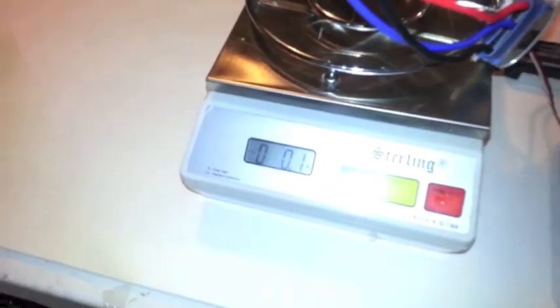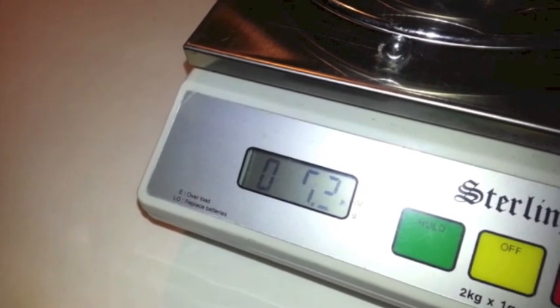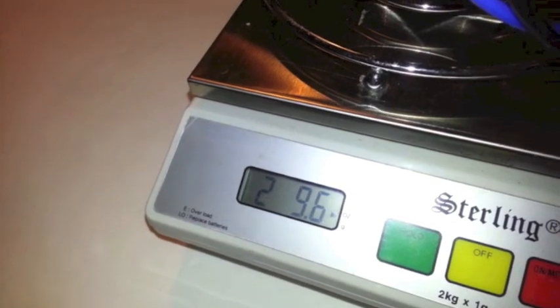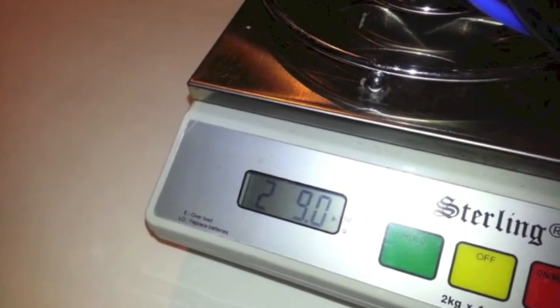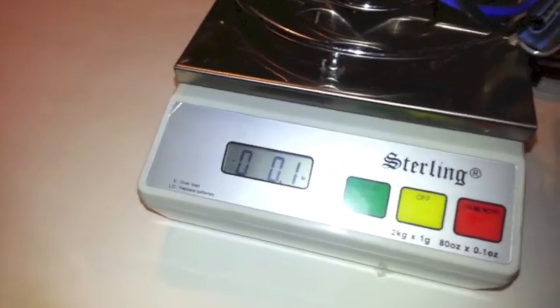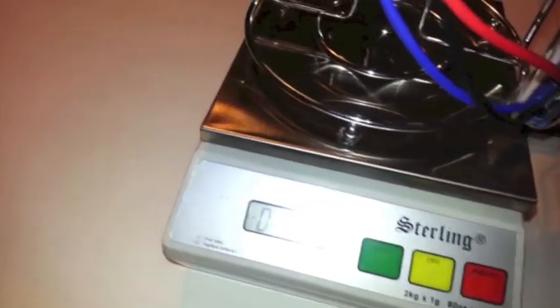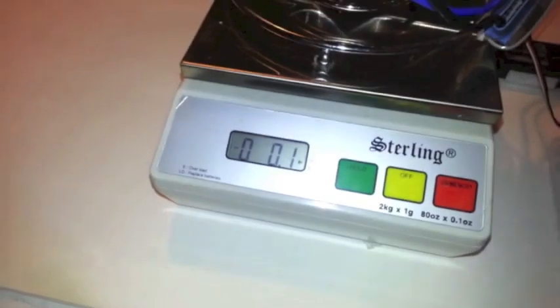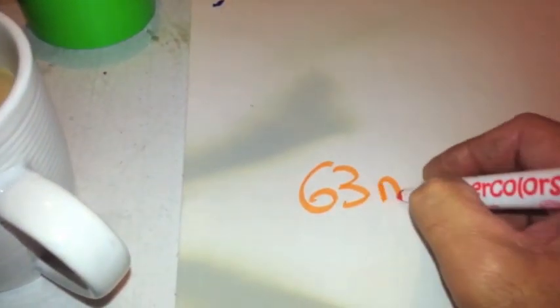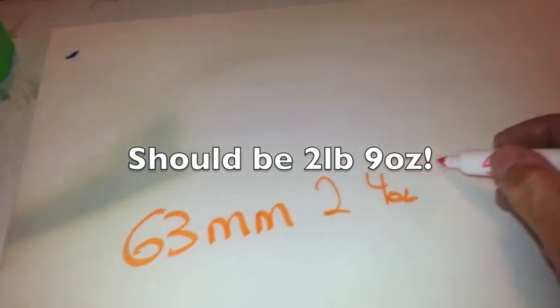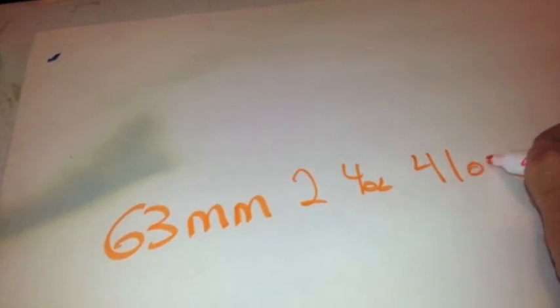Let's see what we get here. Okay, 2 pounds 10 ounces, and then it dropped down to 2 pounds 9. So let's say 2 pounds 9 ounces, which is 41 ounces of thrust. So the 63mm equals 2 pounds 9 ounces or 41 ounces of thrust.